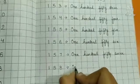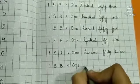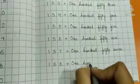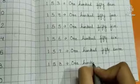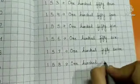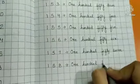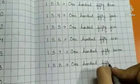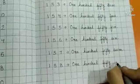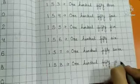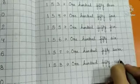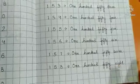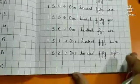Then 158. O-N-E 1, H-U-N D-R-E-D 100, F-I-F-T-Y 50, E-I-G-H-T 8. 158.